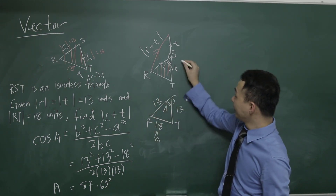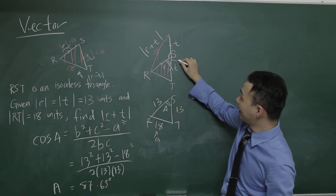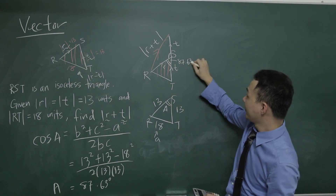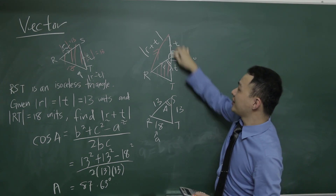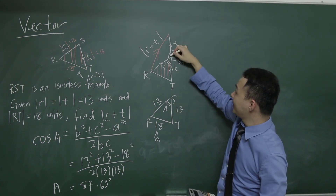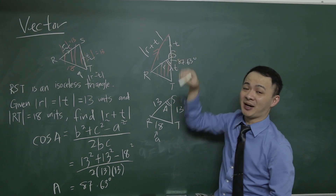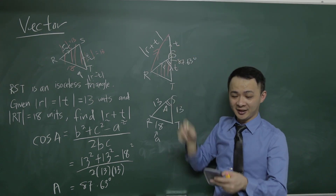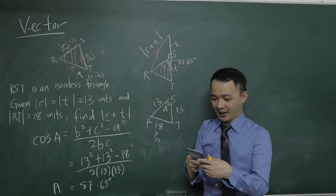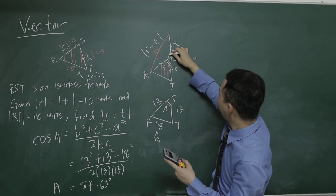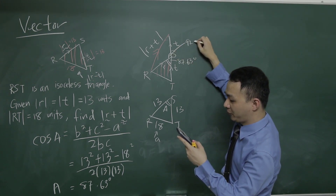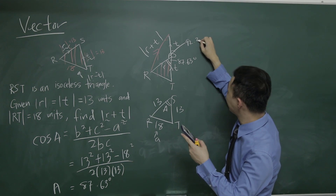So this angle at S is 87.63 degrees. Since the extended line is a straight line, I can get the supplementary angle by doing 180 − 87.63, which gives me 92.37 degrees. This is the angle I need for the next triangle.